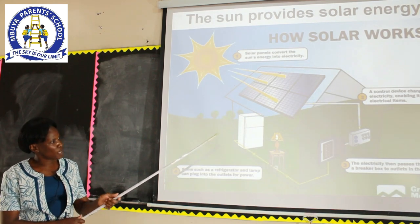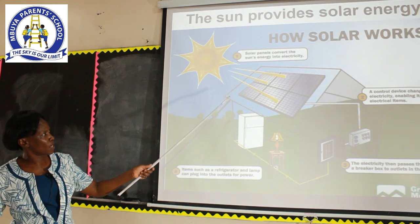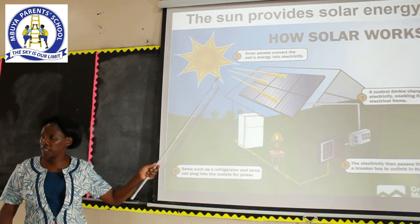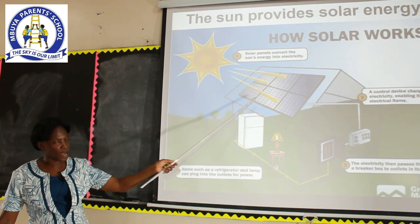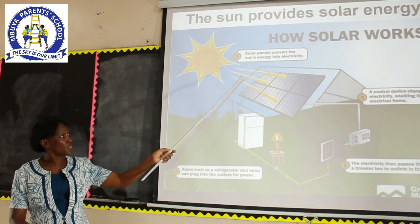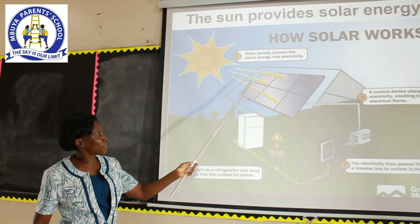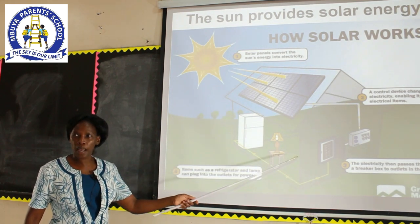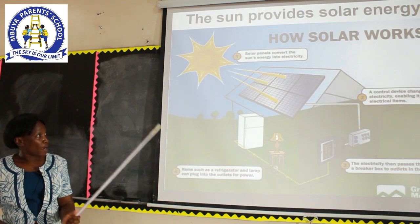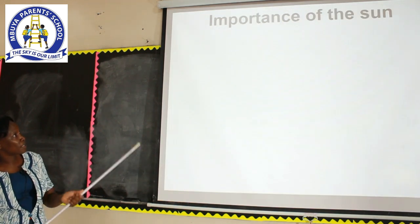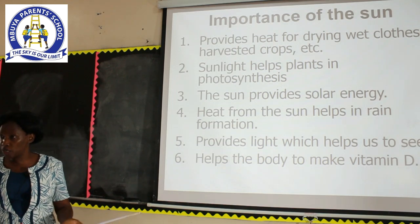Dear children, look at this house. There is something on the roof — this is called a solar panel. This solar panel converts solar energy from the sun into solar electricity. Another importance of the sun in the environment is that it helps in rain formation.